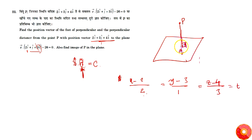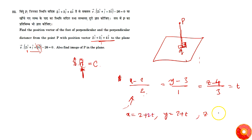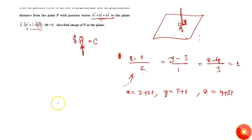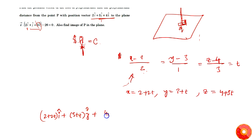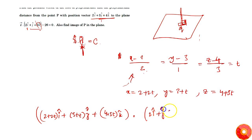Since Q is the foot of the perpendicular, it is a point on the plane and must satisfy the plane equation. From the parametric form we get x = 2 + 2t, y = 3 + t, z = 4 + 3t. Substituting into the plane equation, we compute the dot product of (2+2t)î + (3+t)ĵ + (4+3t)k̂ with 2î + ĵ + 3k̂.